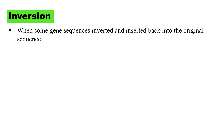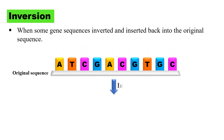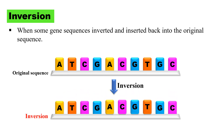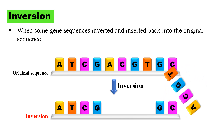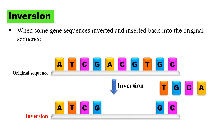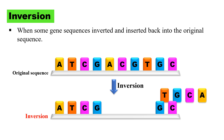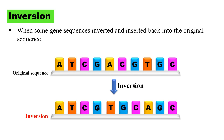Next is inversion. In this case, some sequence of a gene is inverted and inserted back into the original sequence. From this animation: this is the original sequence, and in case of inversion mutation, some portion of the sequence is deleted, then inverted — first it inverts like this — so the sequence has been changed. This inverted sequence is then reinserted back into the original sequence. So inversion is when some sequence within a gene gets inverted and reinserted into the original sequence.